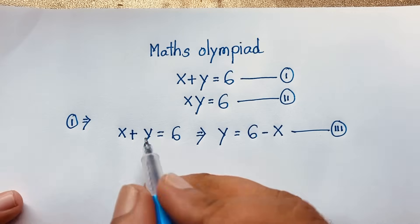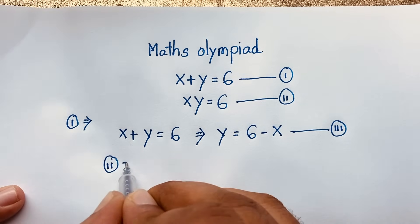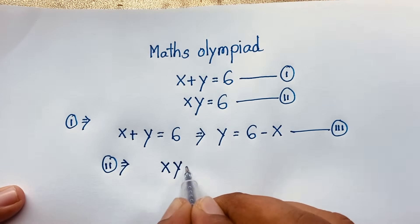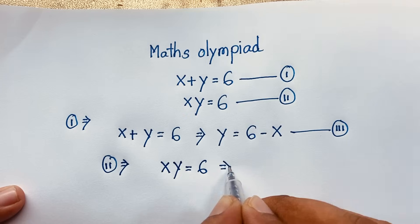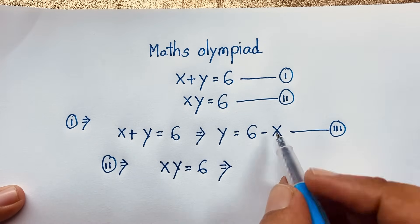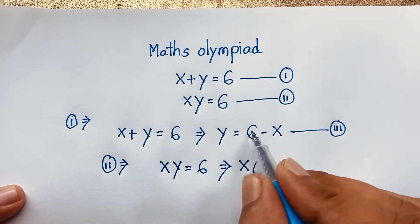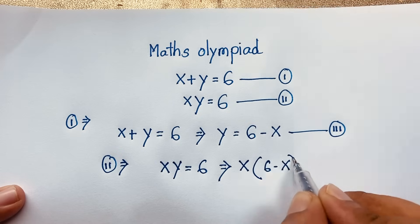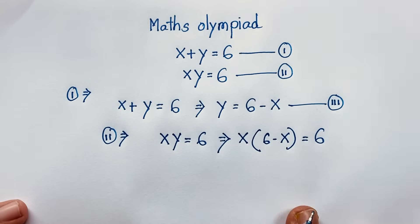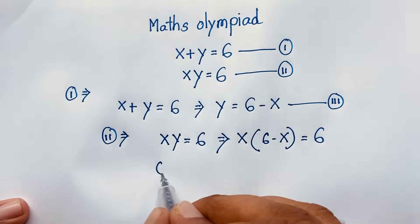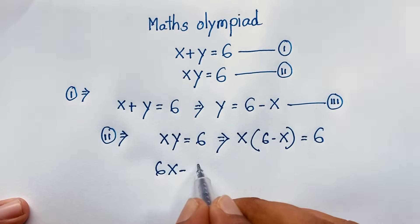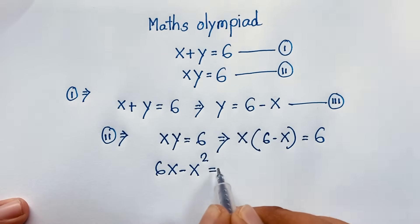Now I take our second equation, which is x times y is equal to 6. But remember that y is equal to 6 minus x. So it will be x times (6 minus x) is equal to 6. Now, 6 times x will be 6x, and x times x will be x squared, so we have 6x minus x squared is equal to 6.